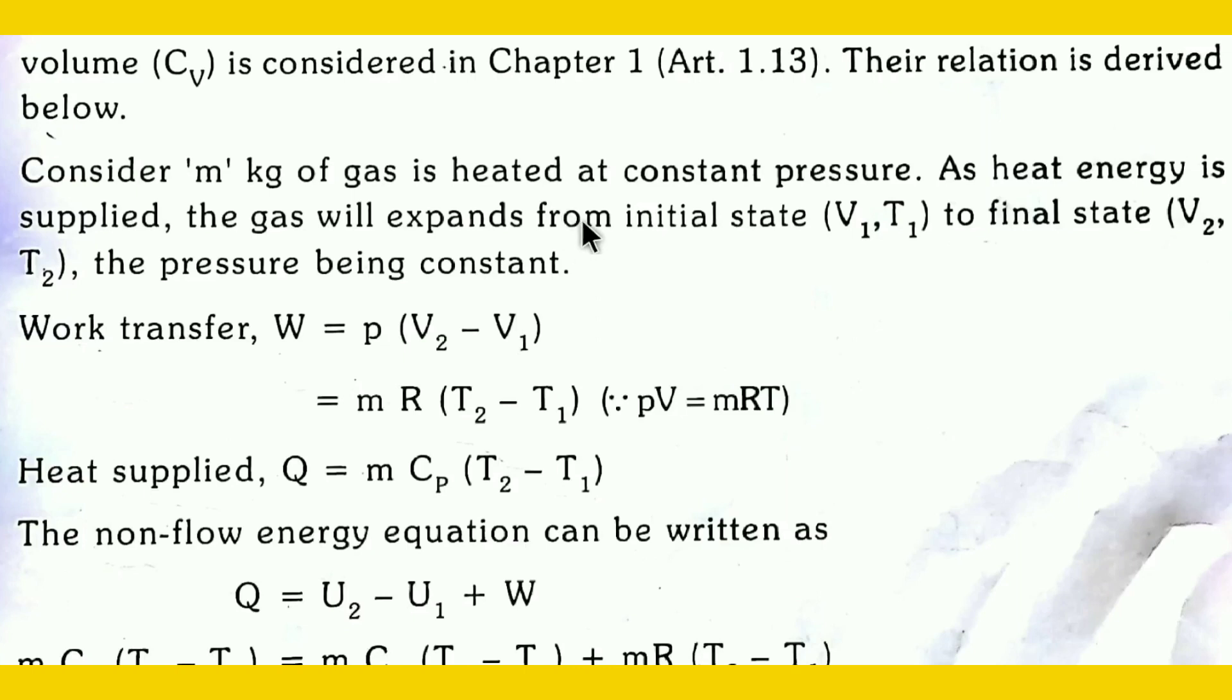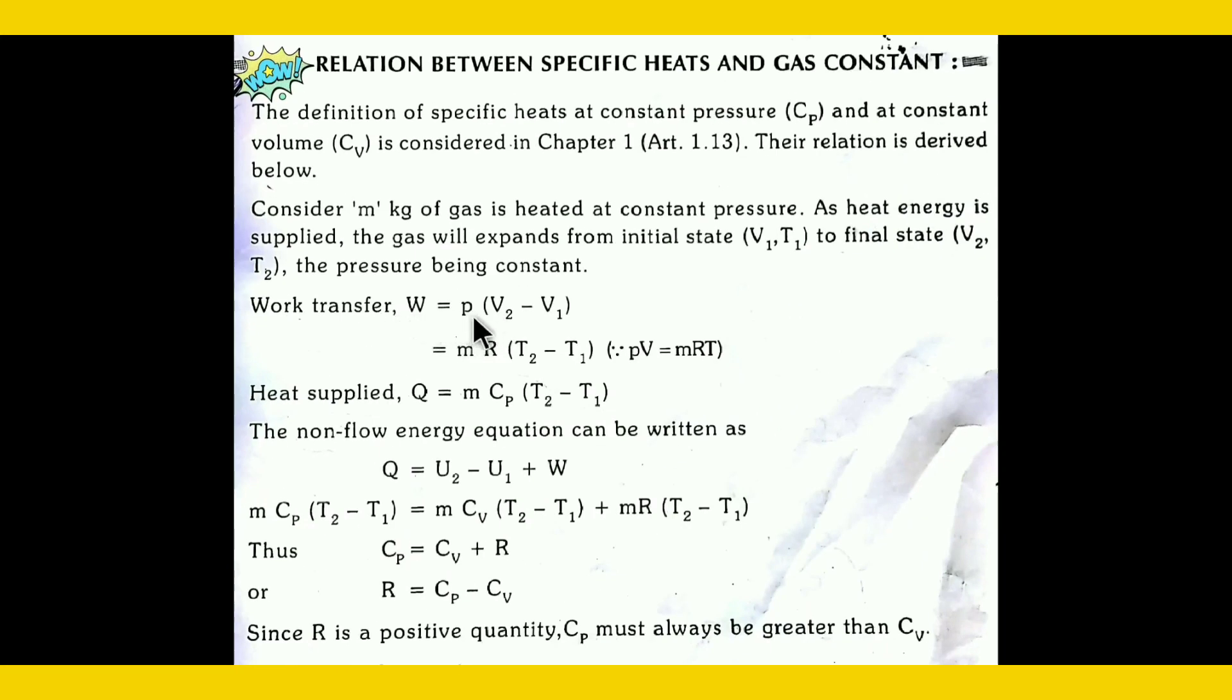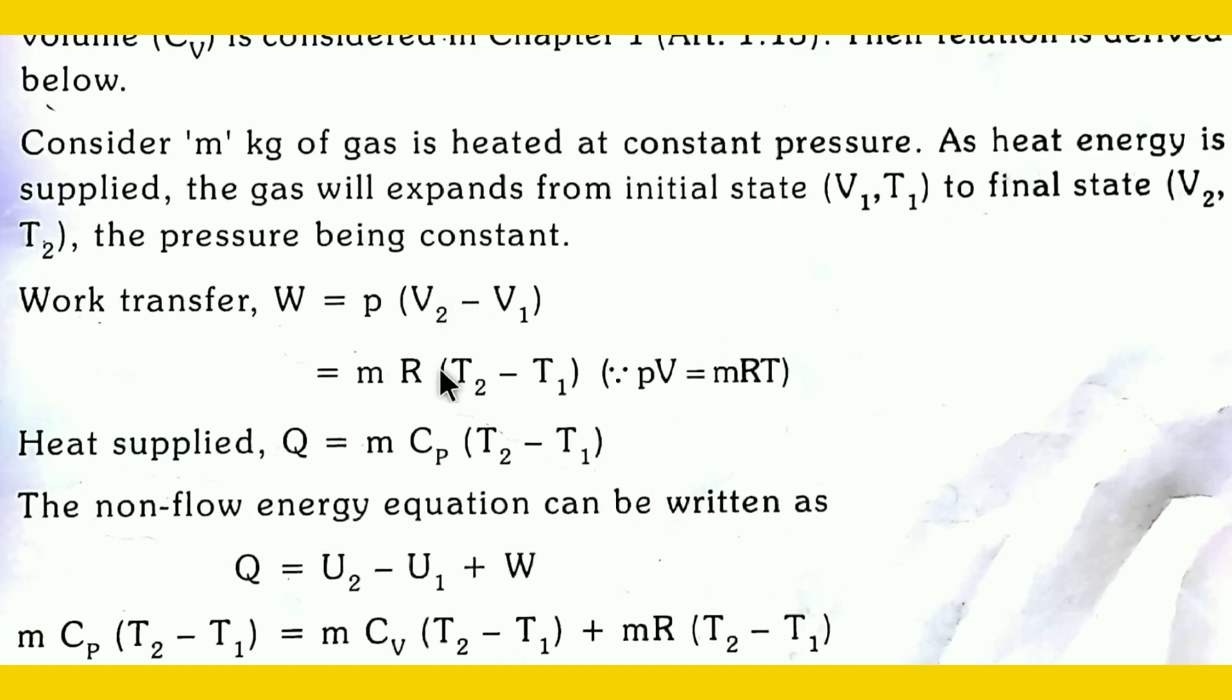You can see the initial stage, that is volume 1 and temperature 1, V1 T1, to final state, that is V2 T2. The work transfer formula is W equals to pressure into volume. Work transfer is the product of pressure and volume, so that is pressure into V2 minus V1.